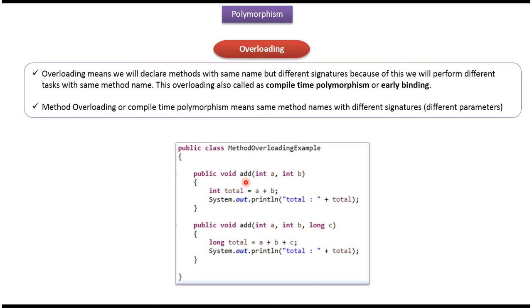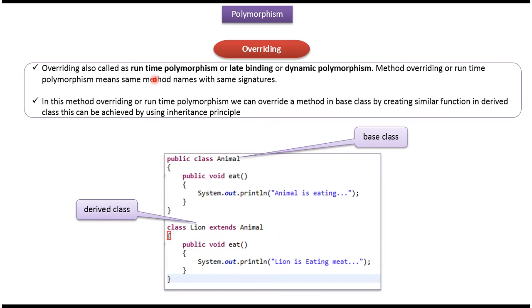Here you can see the example of method overloading. Method names are the same but with different parameters.